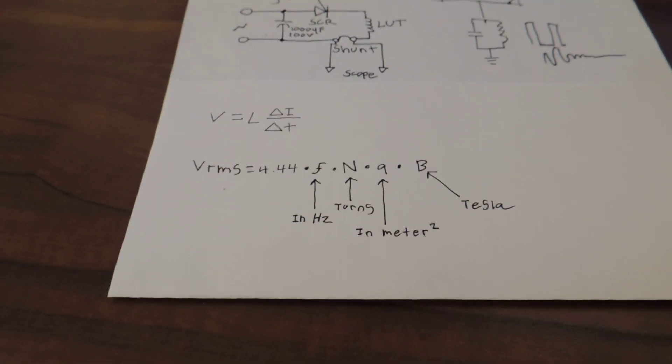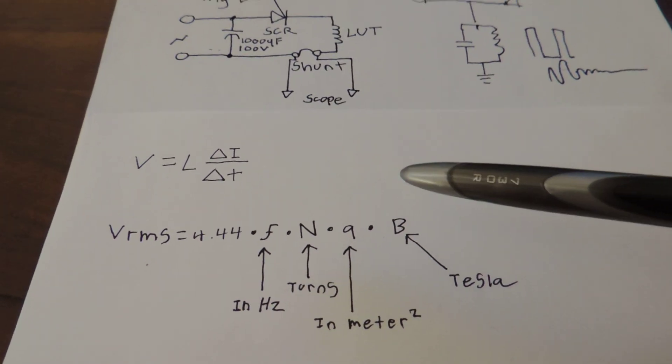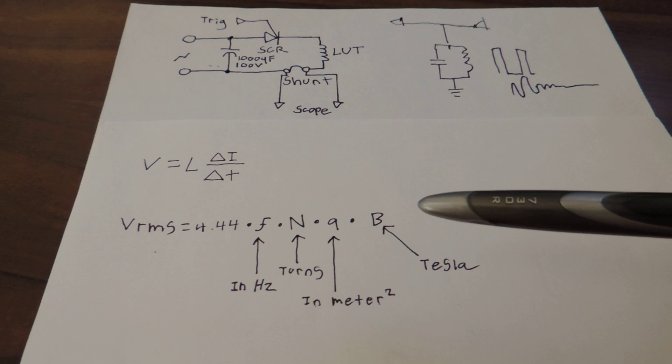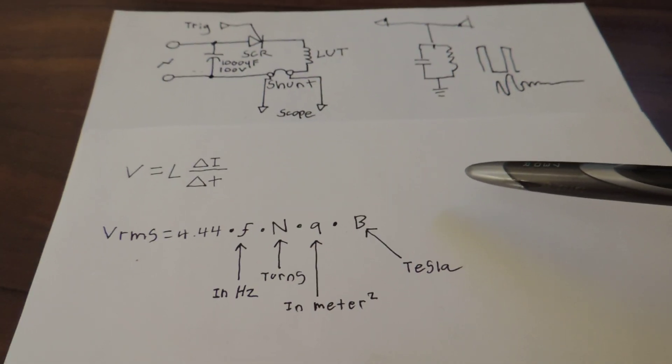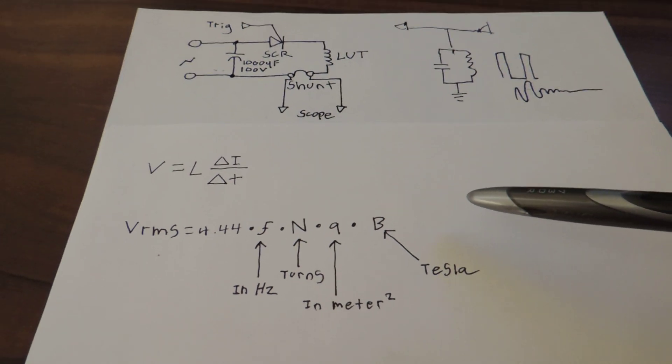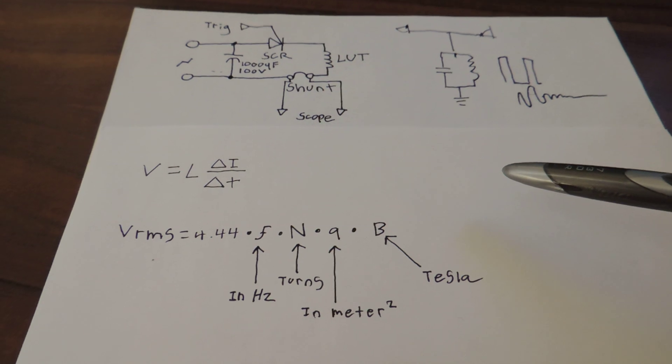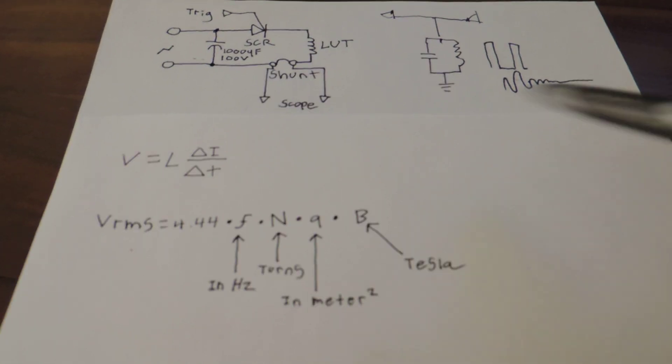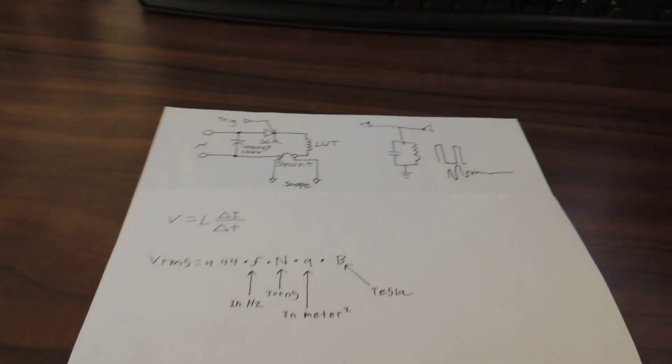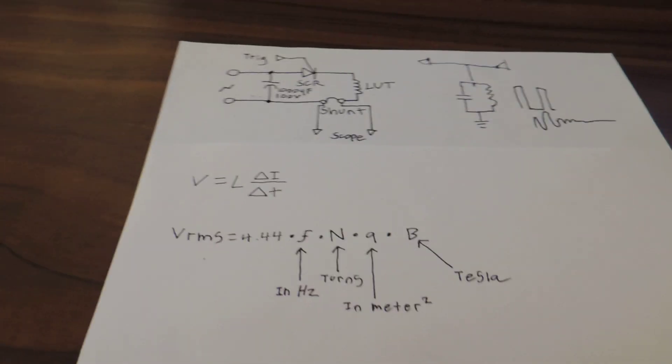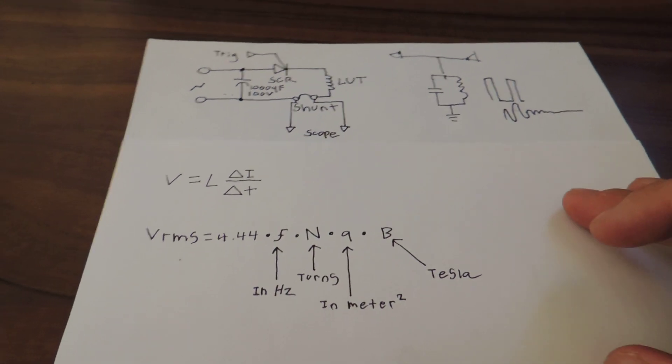I should start off by explaining to you that transformers don't saturate in the same way that inductors do. And the reason for that is because we have a primary that's putting in or applying a net flux to the transformer, you also have a secondary that's absorbing that net flux and converting it back to a voltage and current. That net flux in the core will never saturate the core, assuming you never exceed the voltage turn ratio of a transformer.